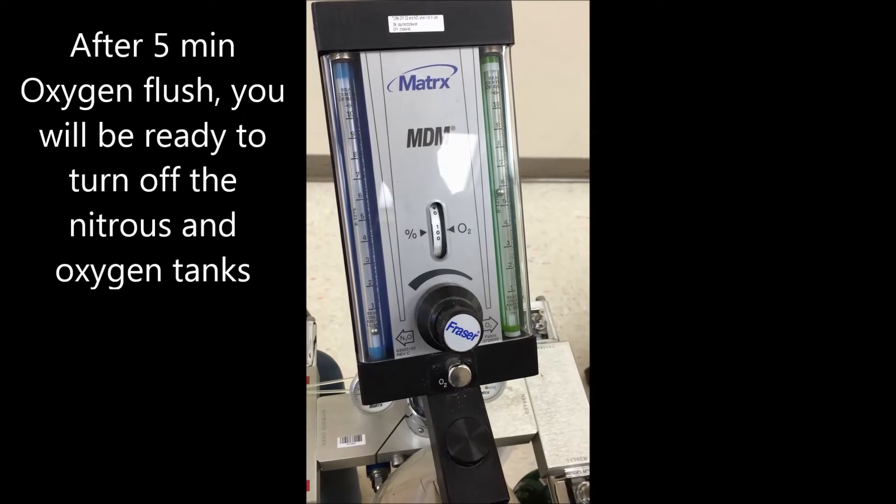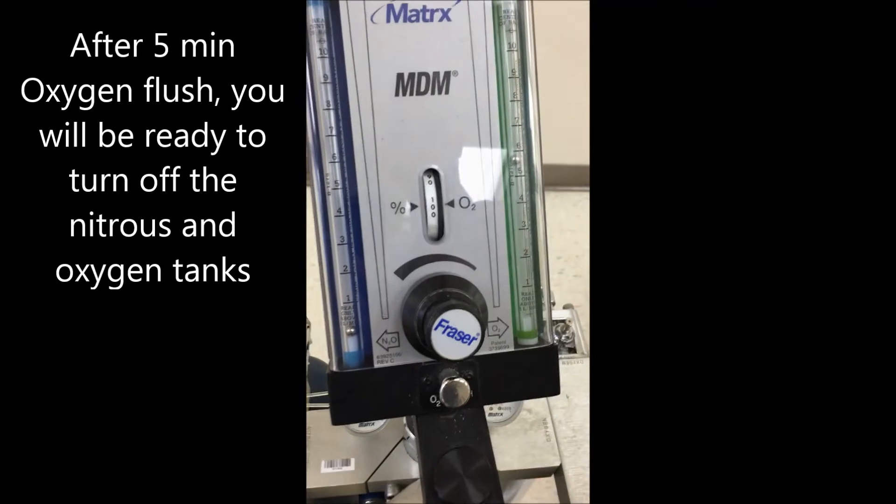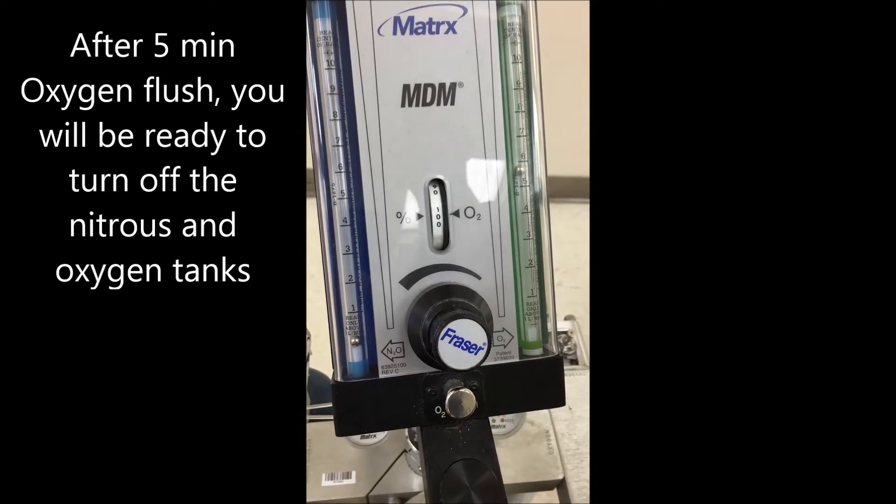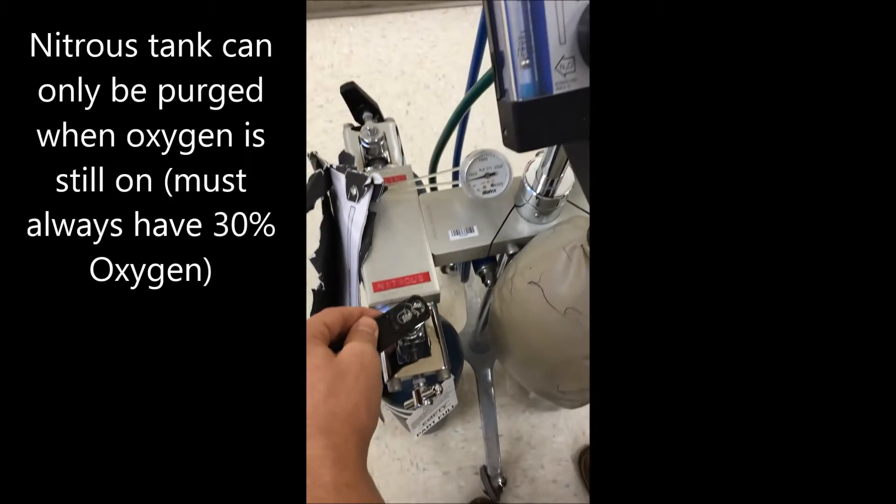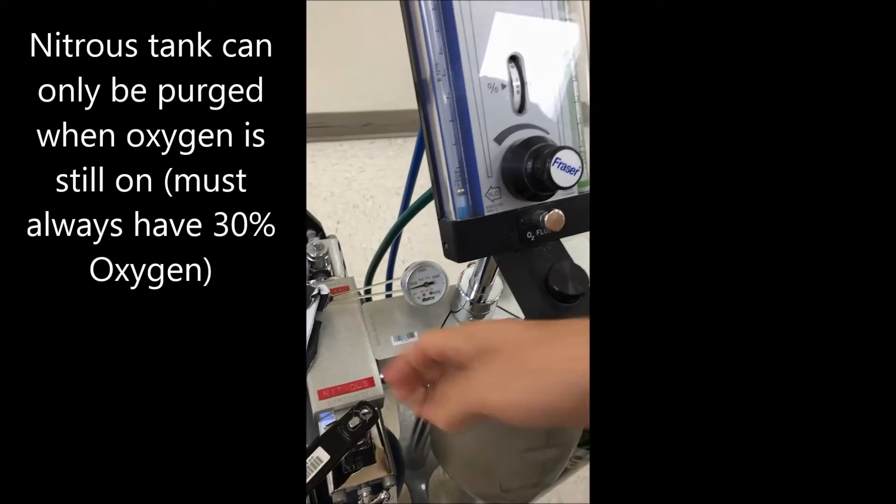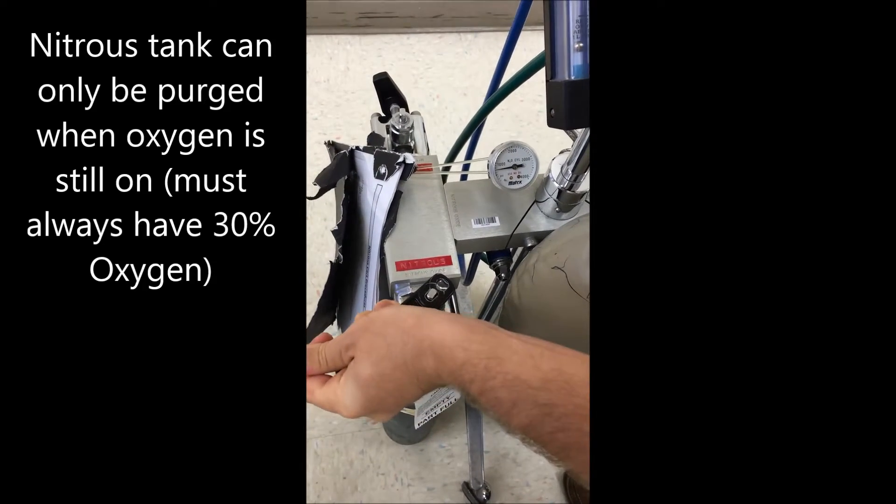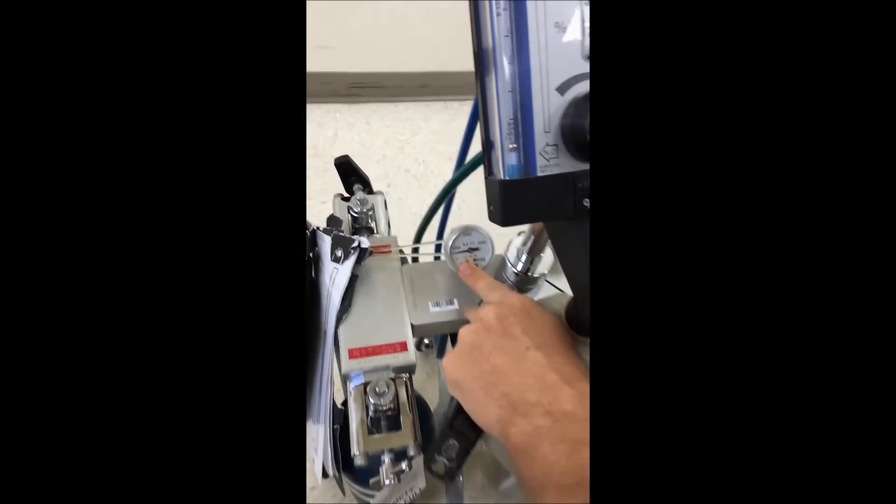So we're on 100% oxygen now and we want to turn off the machine. We want to first purge the nitrous, so we have it on oxygen. We turn off the nitrous tank, leaving the oxygen tank on. Notice PSI is still there.